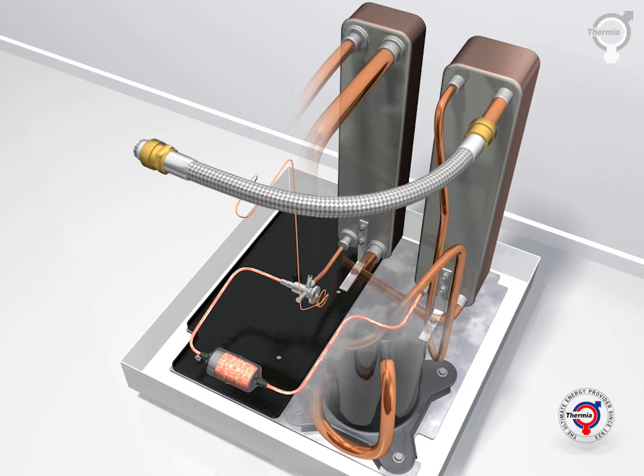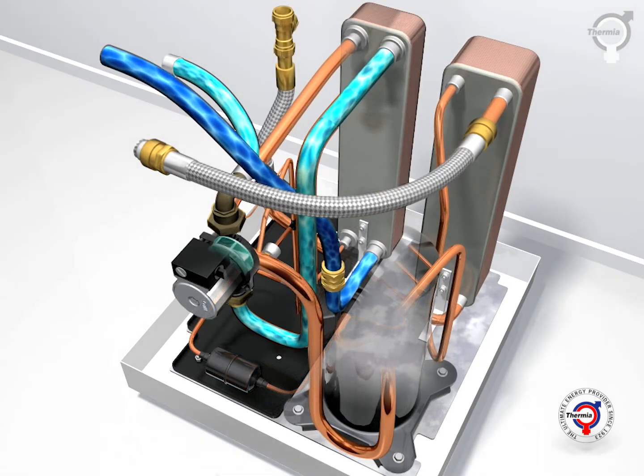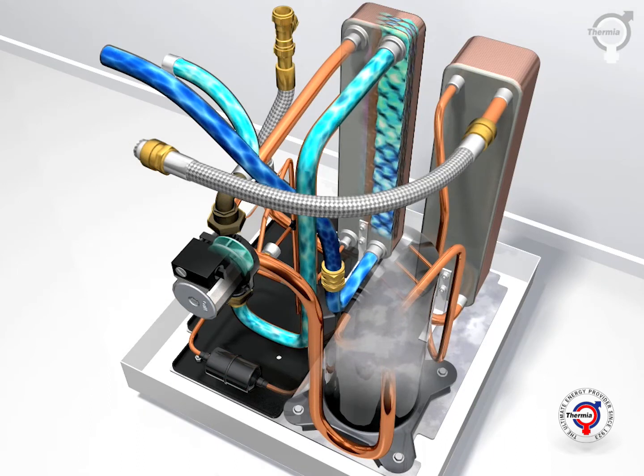The refrigerant liquid now passes a filter dryer and an expansion valve, where its pressure and temperature decreases to its original level. The now cold liquid refrigerant can once again absorb heat from the brine fluid circulating in the evaporator, and so the process proceeds in an endless cycle.